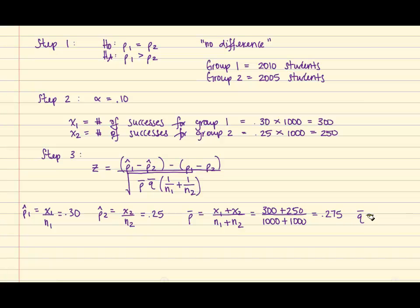Q bar is equal to 1 minus P bar. And so 1 minus P bar is equal to .725. So using this information, we can plug it into our formula and we obtain the following.